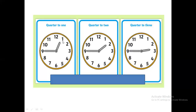If you want to write quarter to time in digital clock: quarter to 1 is 12:45. After 1 o'clock we have passed 45 minutes, so that is 1:45. After 2 o'clock we have passed 45 minutes, so that is 2:45.